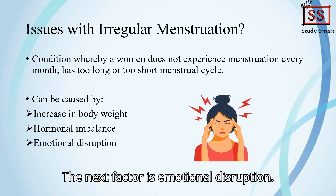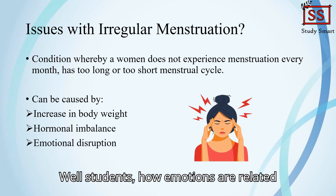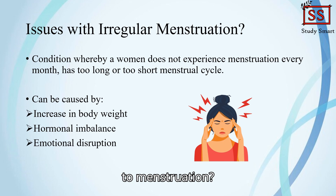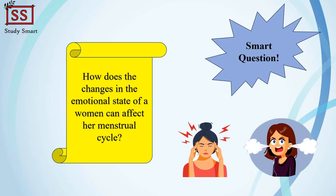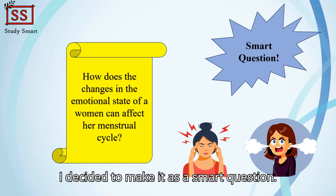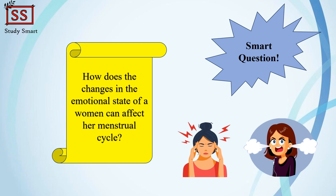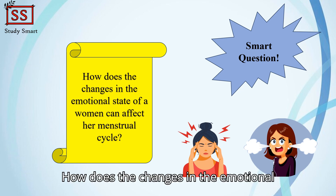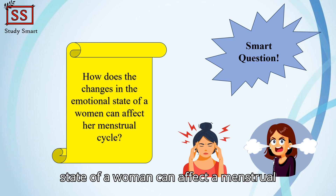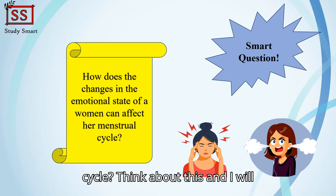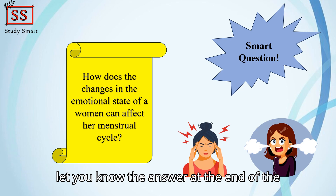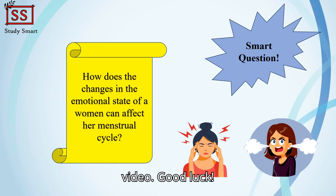The next factor is emotional disruption. How are emotions related to menstruation? I've decided to make this a smart question: How does a change in the emotional state of a woman affect her menstrual cycle? Think about this, and I will let you know the answer at the end of the video. Good luck!